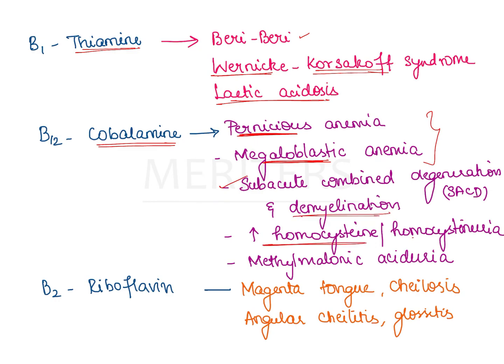B12 deficiency also increases blood homocysteine levels because cobalamin is essential for converting homocysteine into methionine. In deficiency, homocysteine is not converted and accumulates in the body, getting excreted in urine — causing homocysteinemia and homocystinuria. The last condition is methylmalonic aciduria: the conversion of methylmalonyl-CoA into succinyl-CoA requires B12, so if deficient, methylmalonyl-CoA is excreted in the urine as methylmalonic acid.